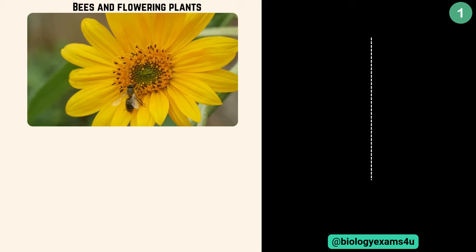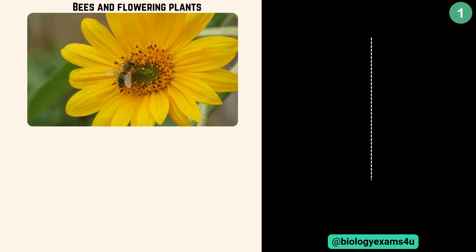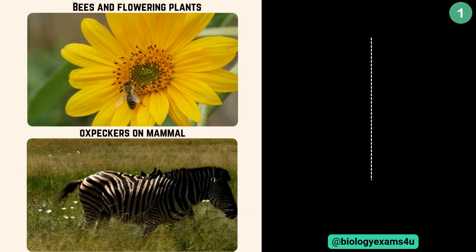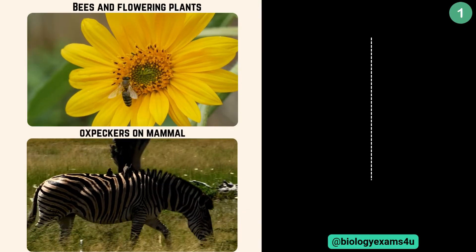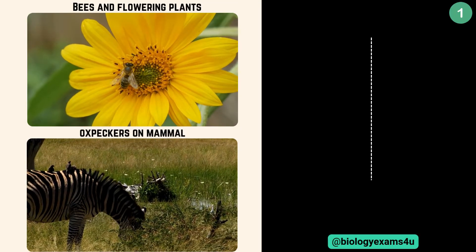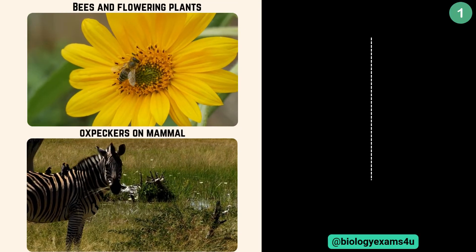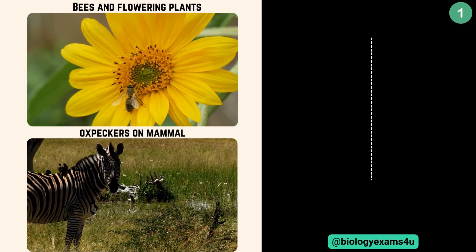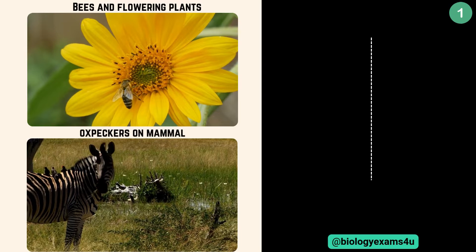Let's begin with some familiar examples for easy understanding. These bees and flowering plants — bees pollinate flowers while they get nectar from the flower or plant. Second example is oxpeckers and large mammals. These birds eat parasites from the skin of mammals like rhinos, buffaloes and zebras. So these mammals get rid of parasites from their body. In this interaction, both species are benefited. This is called mutualism.